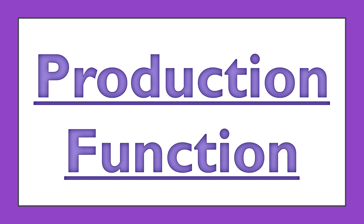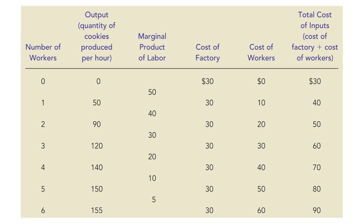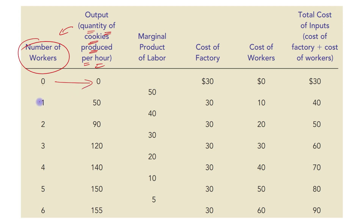Hello students, today's topic is production function. This table shows how the quantity of cookies produced per hour depends upon the number of workers. When the number of workers is zero, the quantity of cookies produced is zero. When the number of workers is one, quantity produced is 50. When the number of workers increases to two, the quantity of cookies produced per hour is 90.